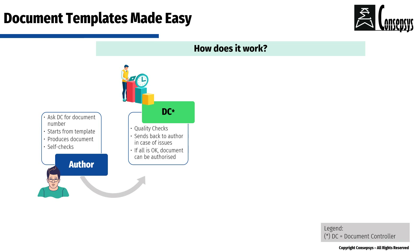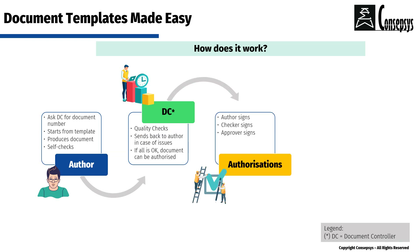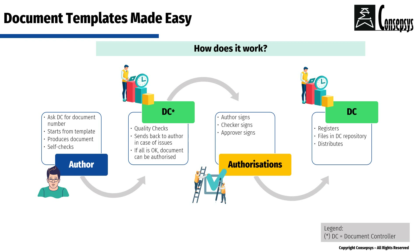Then Alex will send the document to the document control team for them to quality check and process it. In case something is identified as an issue during quality checks, the document control team will send the document back to Alex for modification. If everything is all right, then the document can be authorized. Once it's an official document, the document controller can register it, file it into the document control repository, and distribute it.